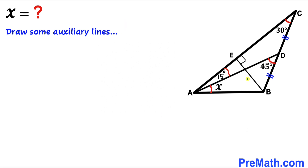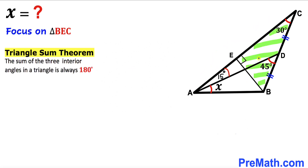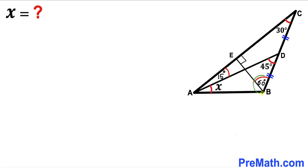I have dropped a perpendicular EB onto side AC. Now let's focus on right triangle BEC and apply the triangle sum theorem. The sum of interior angles in a triangle is always 180 degrees. In this triangle, if this angle is 30 degrees and this angle is 90 degrees, then angle EBC must be 60 degrees.